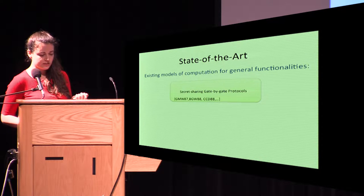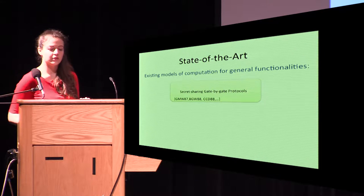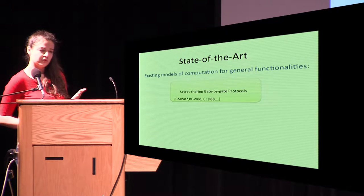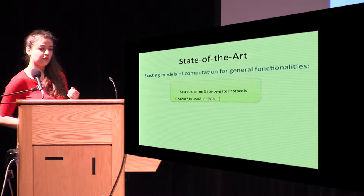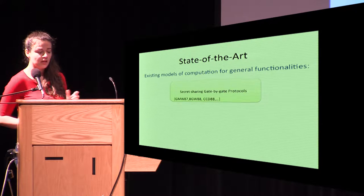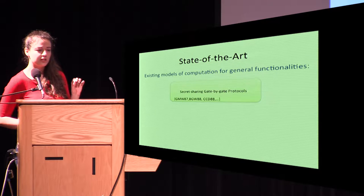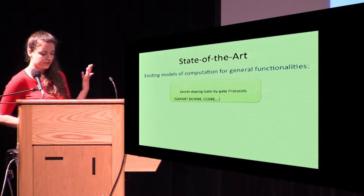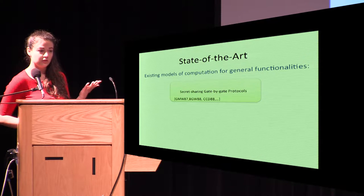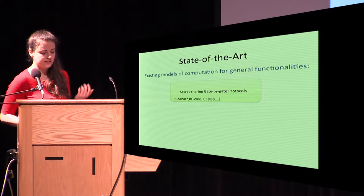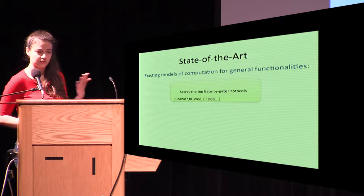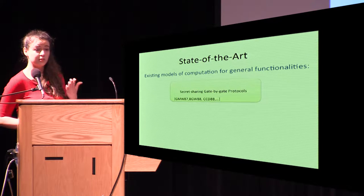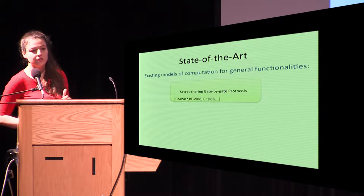Let me start with the state of the art in information-theoretic protocols. There are many IT protocols that work for both the honest majority setting and the dishonest majority setting with pre-processing. I'll split them into two big categories. The first category includes what we call traditional secret-sharing gate-by-gate protocols — the GMW, BGW, and CCD protocols.